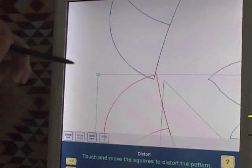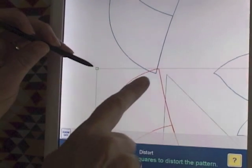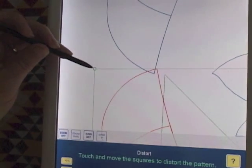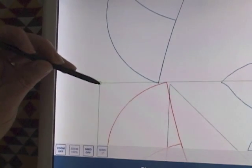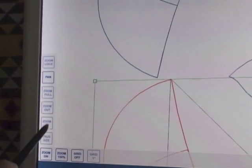Now I'm going to grab this corner of the distort block and just move it until that corner of my pattern matches the corner of the triangle. Perfect. Let's zoom out.